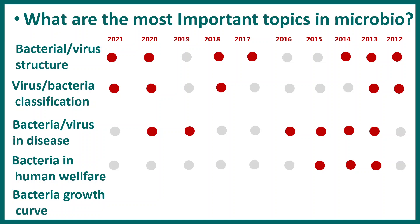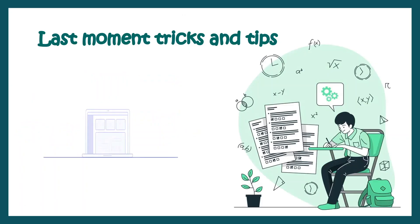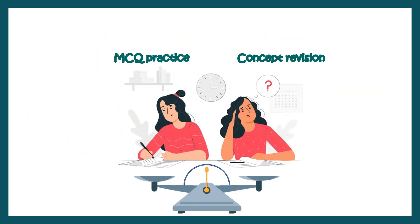Pay attention to this particular topic: viruses and bacteria associated with specific diseases. Almost every year they ask a question on that part, and last year they didn't — which means there is a high chance they will ask a question from this topic this year. Last-moment tricks and tips are really important to shape your rank. You need to practice MCQs and also revise concepts, maintaining a balance between these two processes. Otherwise you cannot succeed in this exam.